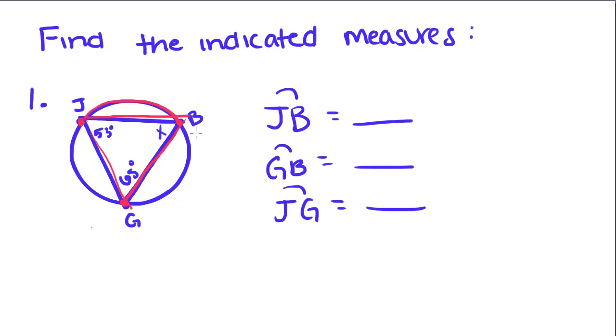JB is captured by the angle G, so that means that this angle is half the length of JB. So 65 is equal to half the length. We're just going to call this arc X. We're going to multiply both sides by 2 to find what X equals, and X equals 130 degrees.